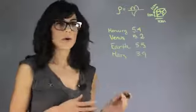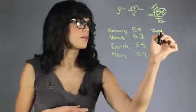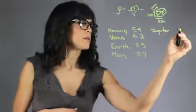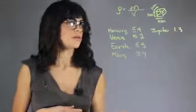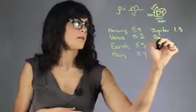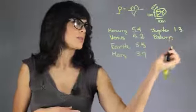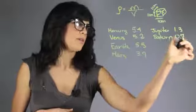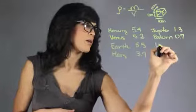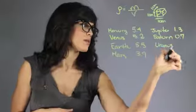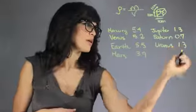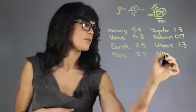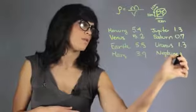Let's look at the outer planets. Jupiter is only 1.3. Saturn, which is the least dense, is 0.7. Uranus is 1.3 again. And Neptune is 1.6.